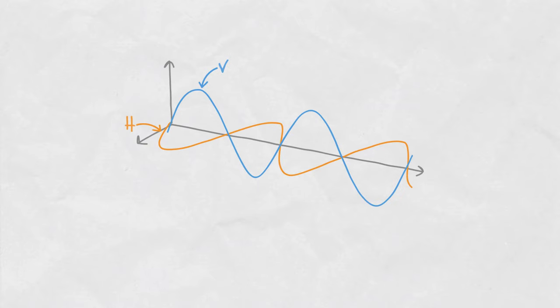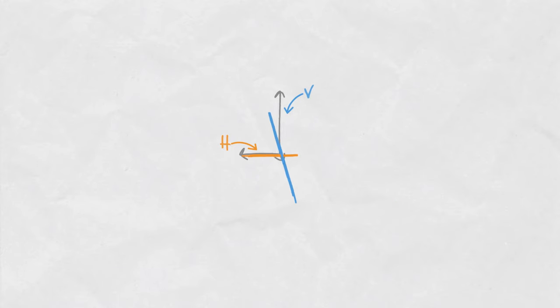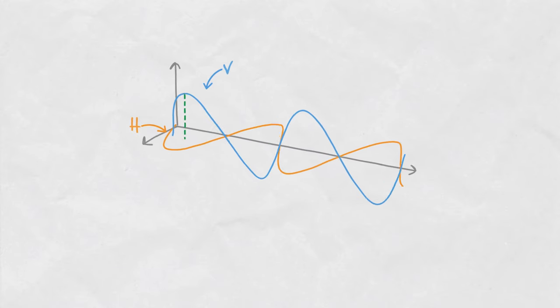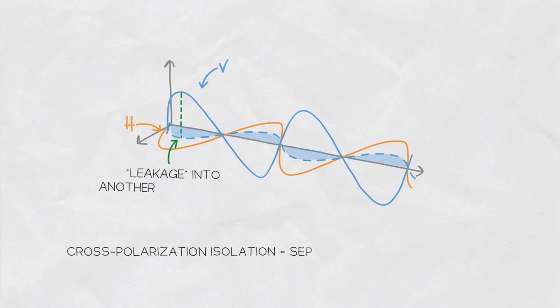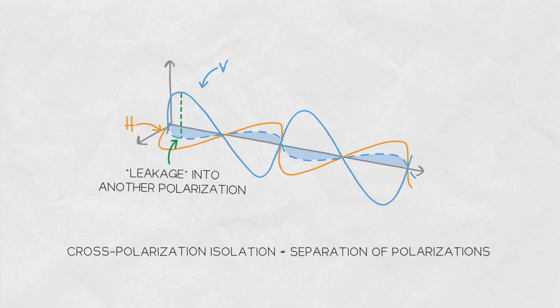In the real world, isolation between horizontal and vertical is not perfect. Antennas with two polarizations have a parameter called cross-polarization isolation which tells you how well the H polarized antenna system and the V polarized antenna systems are separated. The higher the isolation, the better.